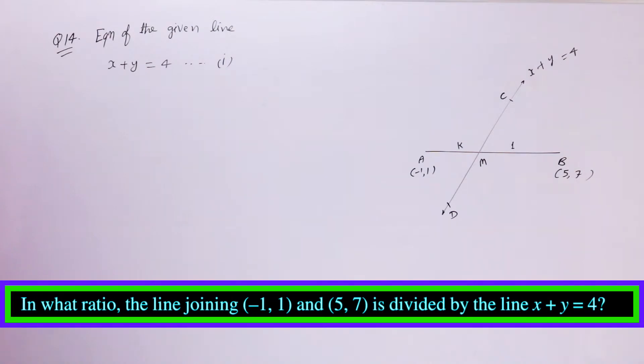Question number 14. In what ratio would the line joining (-1, 1) and (5, 7) be divided by the line x + y = 4?